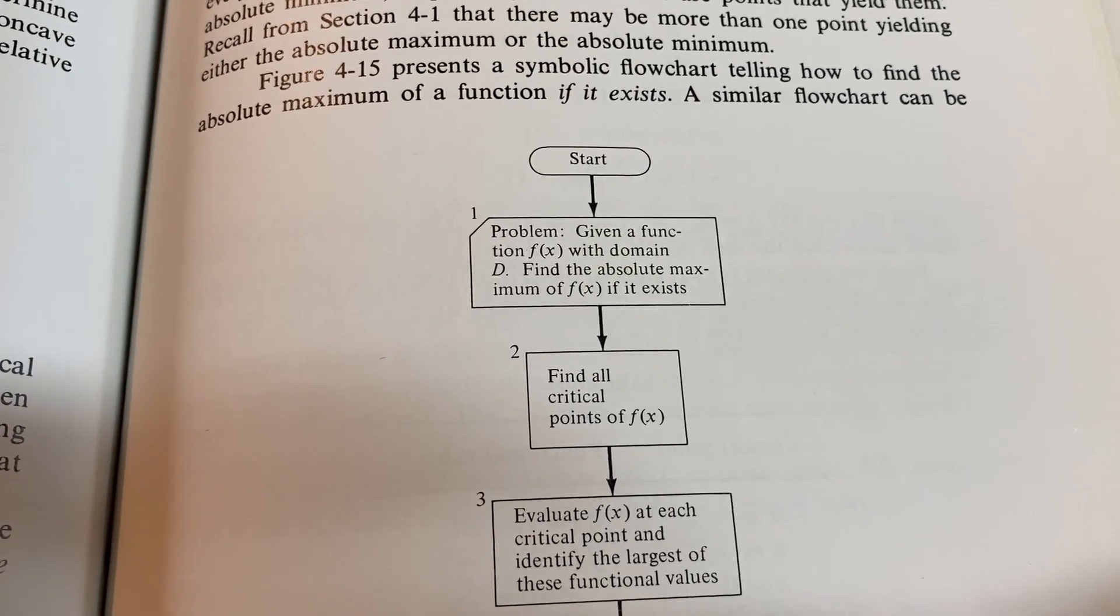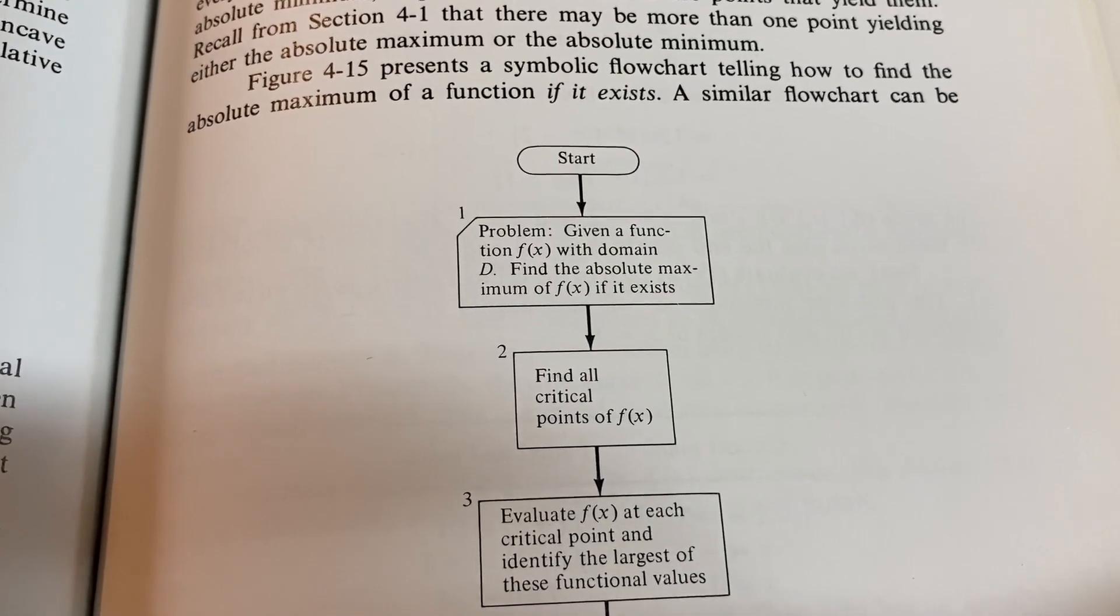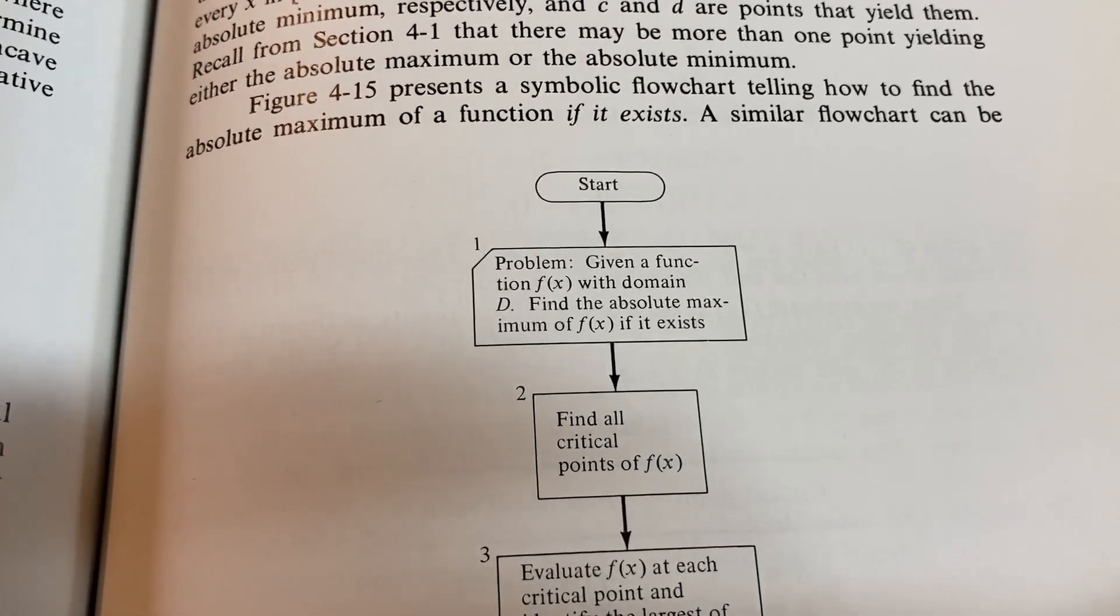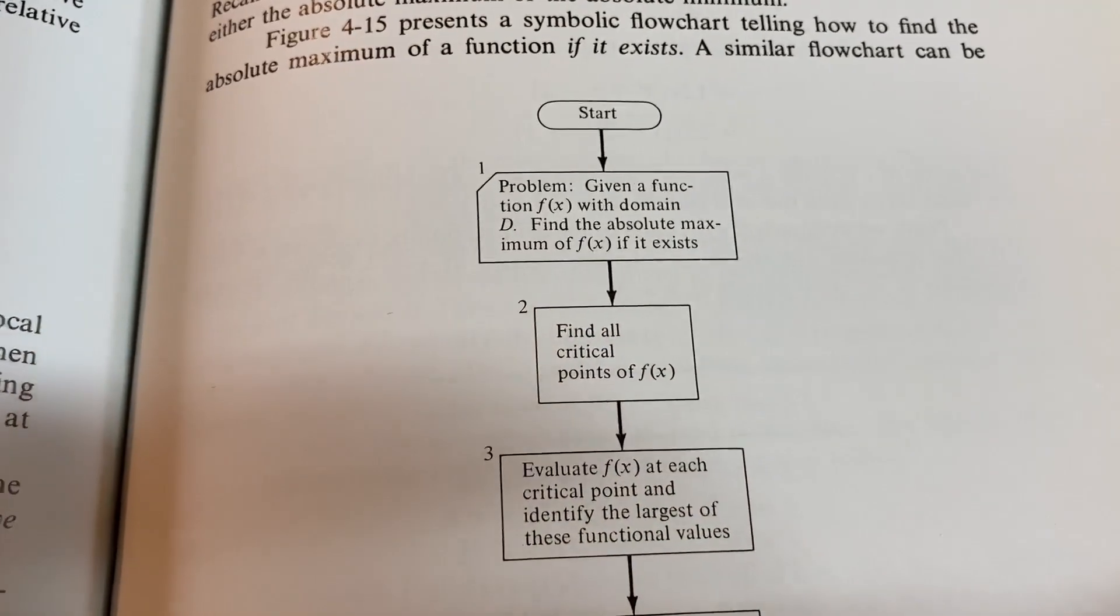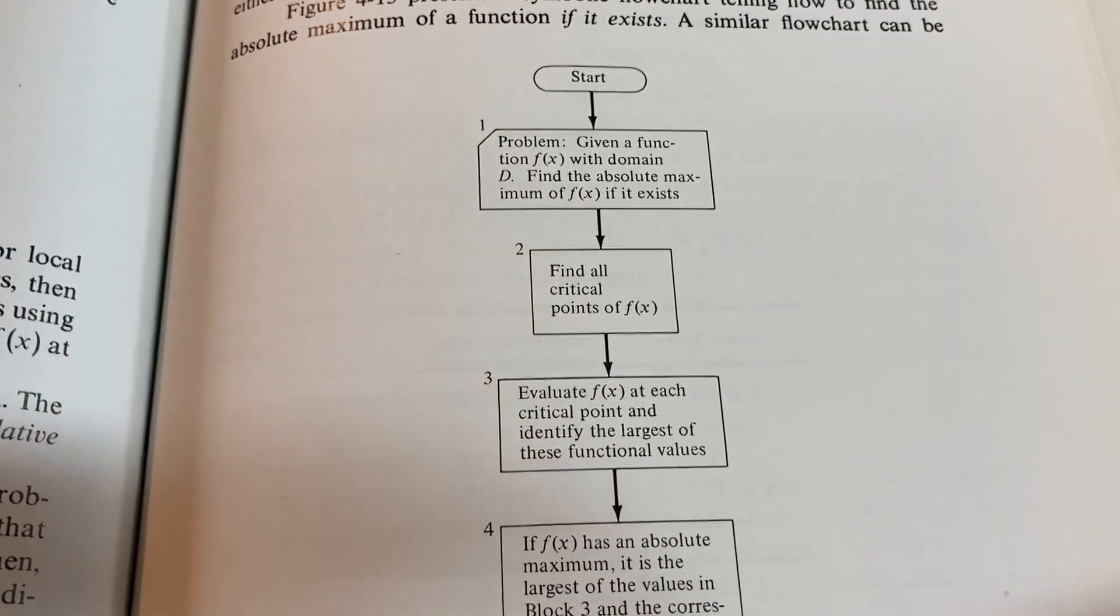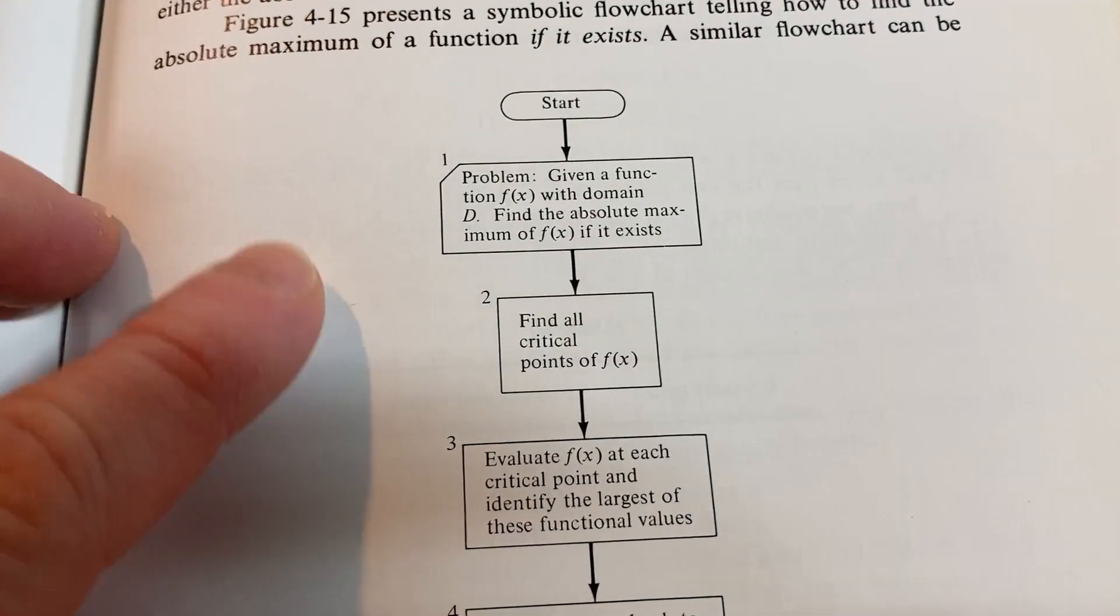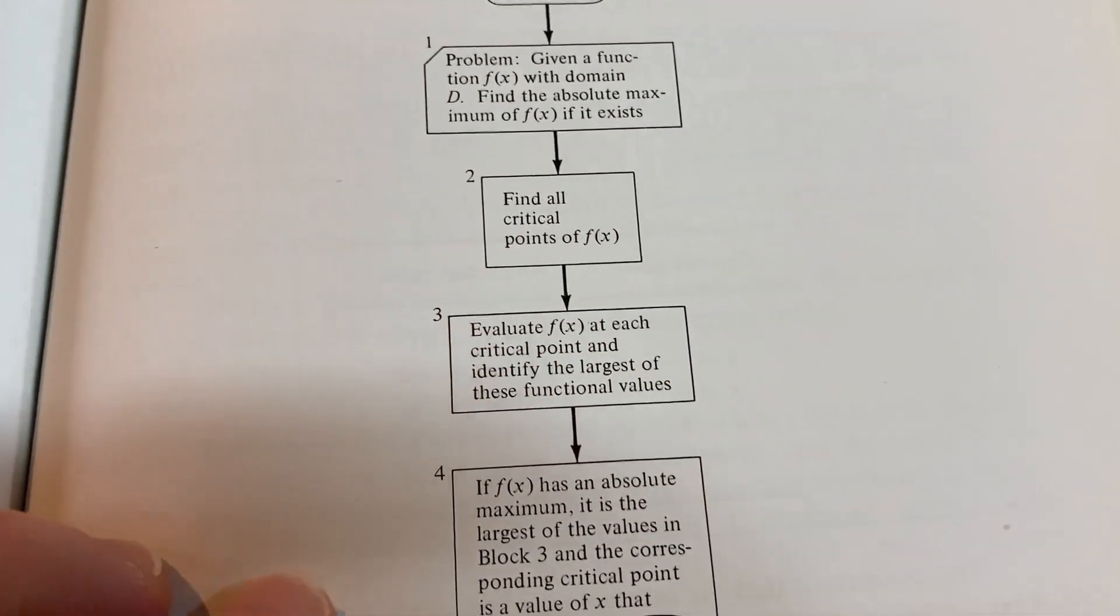Here's the flow chart for finding the extrema of a function on a domain D. So if your function is continuous on a closed interval, it's going to have an absolute maximum and an absolute minimum. That's by something called the extreme value theorem. And it gives you the steps. Find all the critical points.